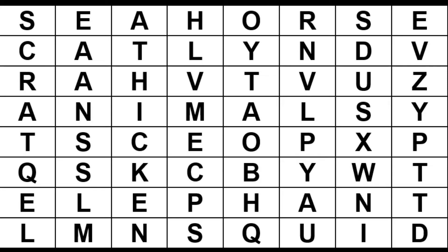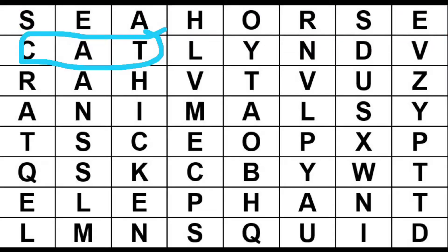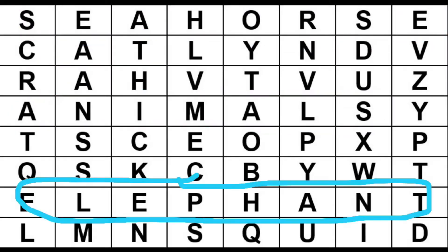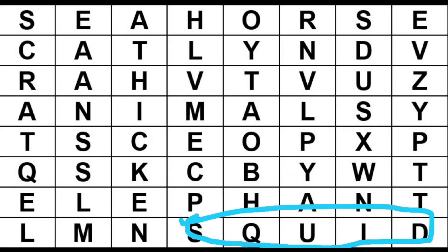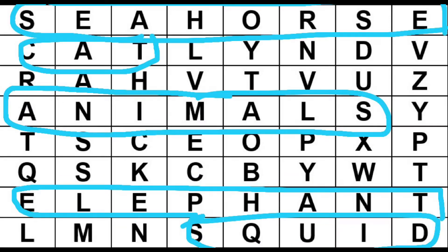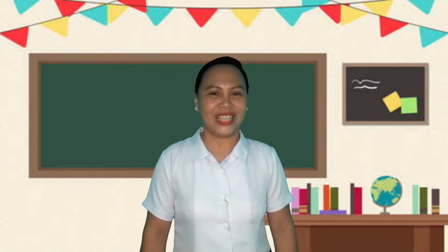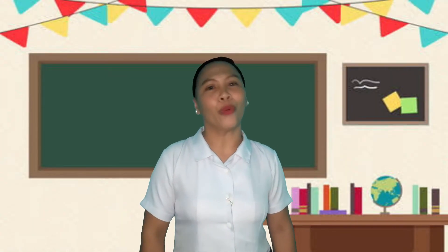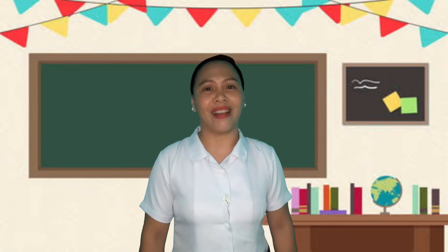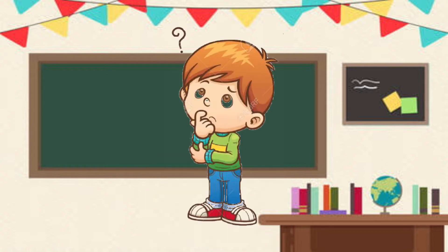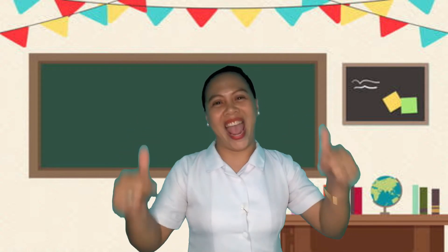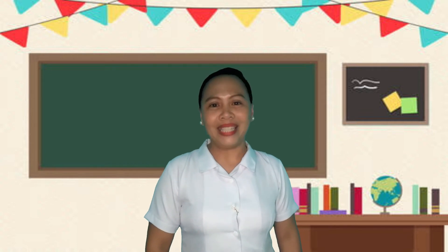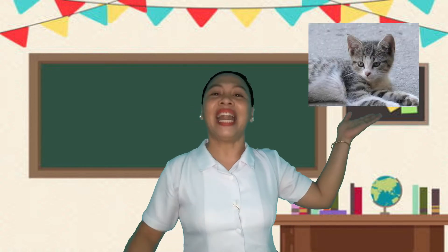Great! Let's see if you really found the words. Seahorse, Cat, Animals, Elephant, Squid. Amazing! So, based on the words that you found a while ago class, what do you think our lesson for today is? Okay, very good! Our lesson is all about animals. Animals that live on land and in water.